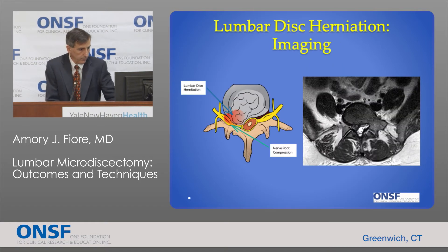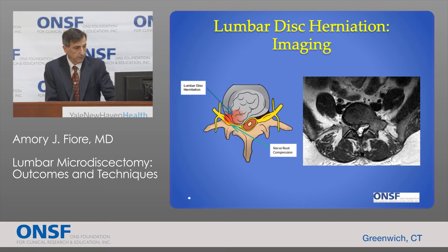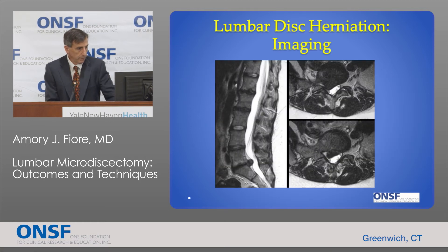Here is an image of a lumbar disc herniation on MRI. This is a cross-sectional image — the disc is here, and this is the sac of nerves. You can see the herniated disc, which is on the right side — the dark part is what's pushing on the nerve and causing the symptoms. And then this is another view — a sagittal view from the side. Here you can see a disc herniation which is clearly protruding and pushing on the nerve, and then a cross-sectional view again.